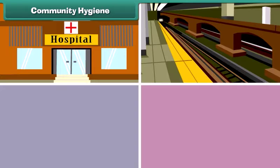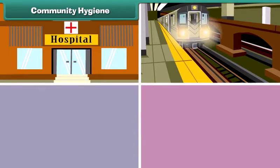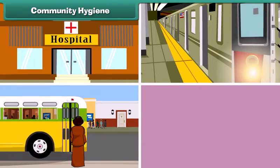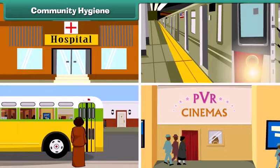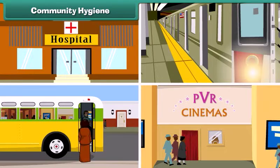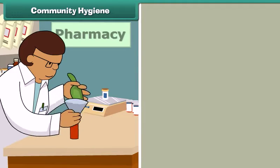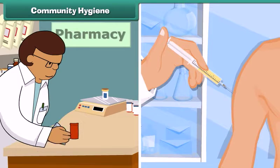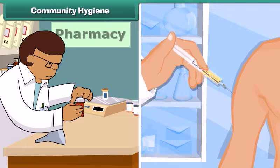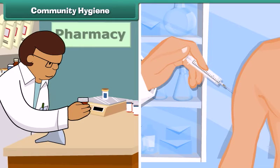Next, we must ensure community hygiene by keeping public places like hospitals, railway stations, bus stands, and cinema halls clean, and by making medicines and vaccines available to people to cure and prevent diseases.